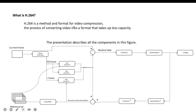H.264 is a method and format for video compression — the process of converting video into a format that takes up less capacity — and it is an industry standard. The presentation will describe all the components in the encoding process. Before talking about the whole process of encoding, let me give the definition of some concepts.